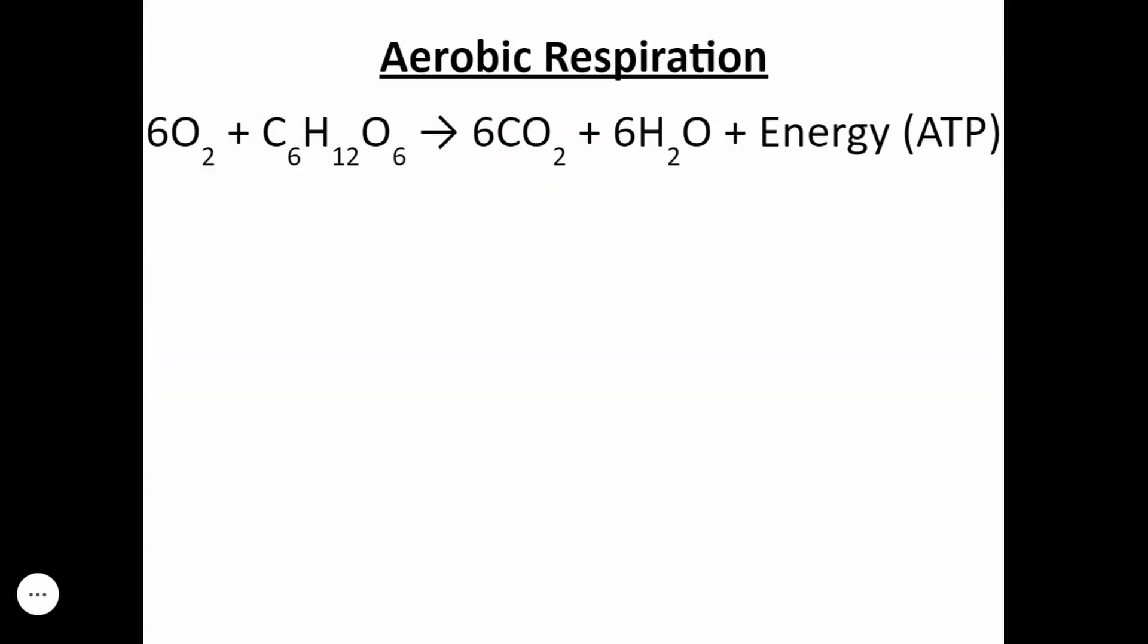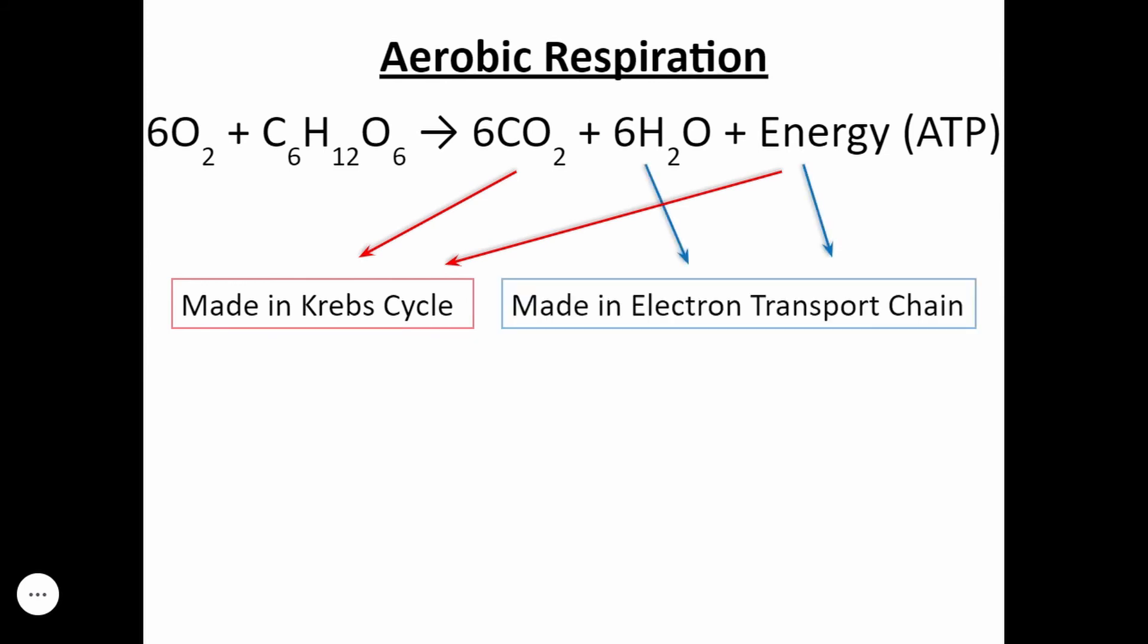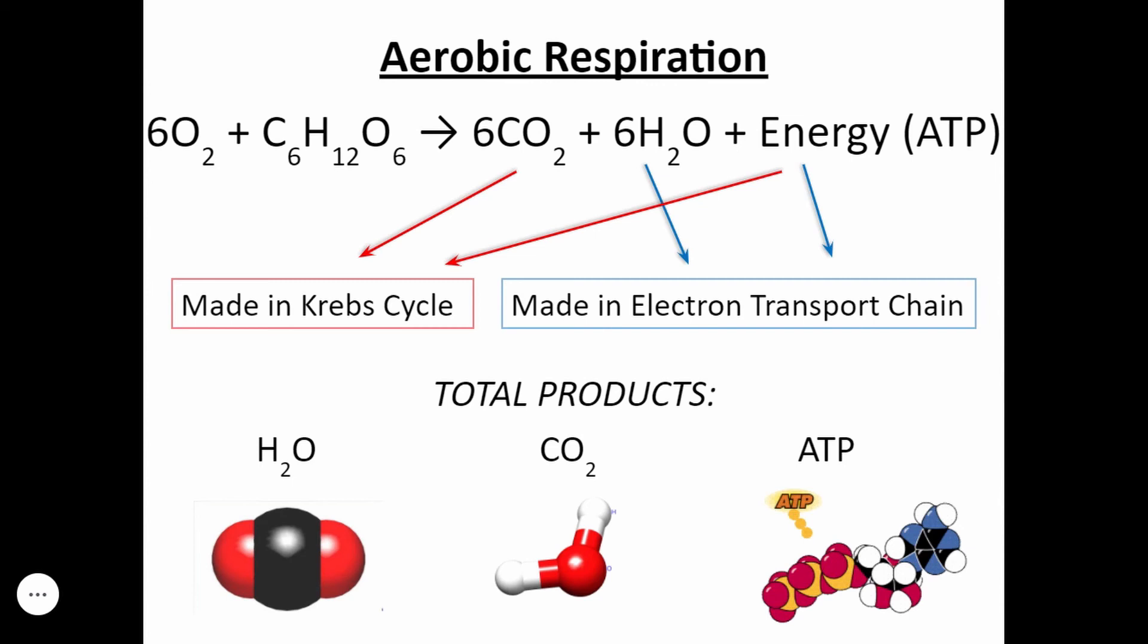For aerobic respiration, we have our overall reaction: 6O2 plus glucose yields 6CO2 plus 6H2O plus energy in the form of ATP. In Krebs cycle, we make carbon dioxide and we make energy. And in the ETC, or electron transport chain, we make water and we make a lot of energy, about 34. So our total products are water, carbon dioxide, and ATP.